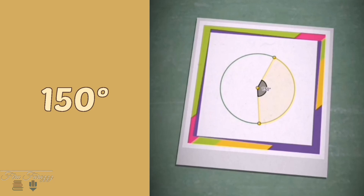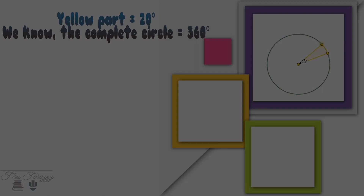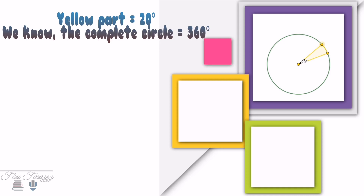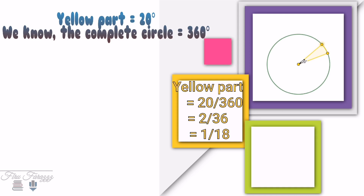In the first figure, the yellow part is 20°. We know the complete circle is 360°, so the fractional part of yellow is 20 by 360. Cutting out the common factor 10, we get 2 by 36. Again removing the common factor 2, we get 1 by 18.